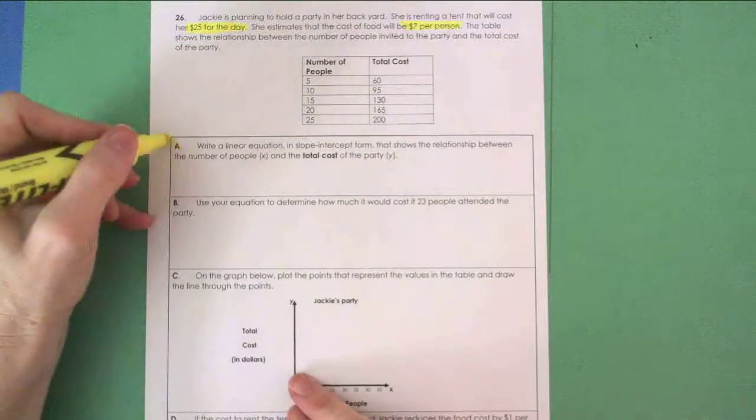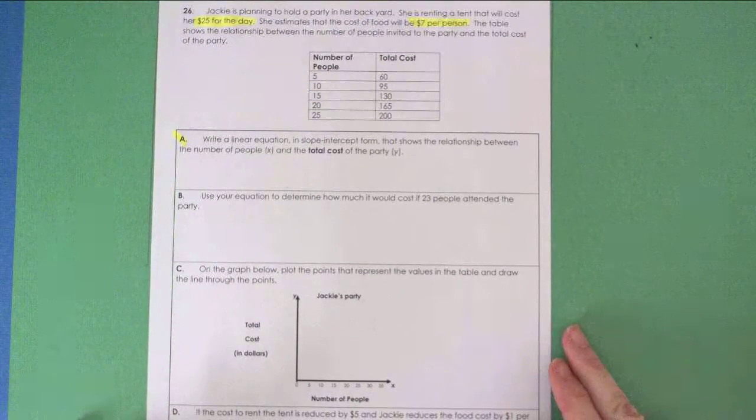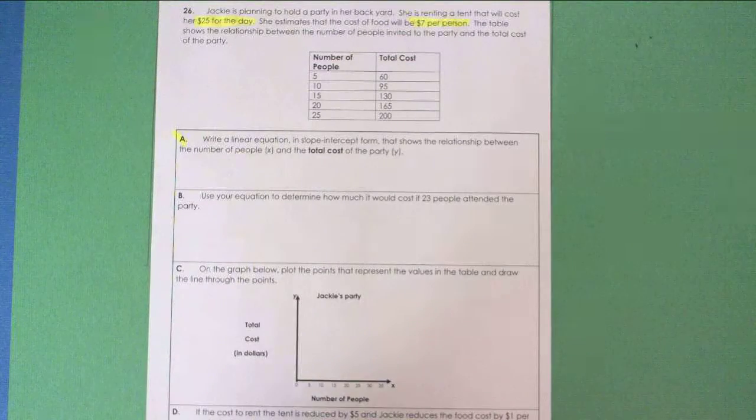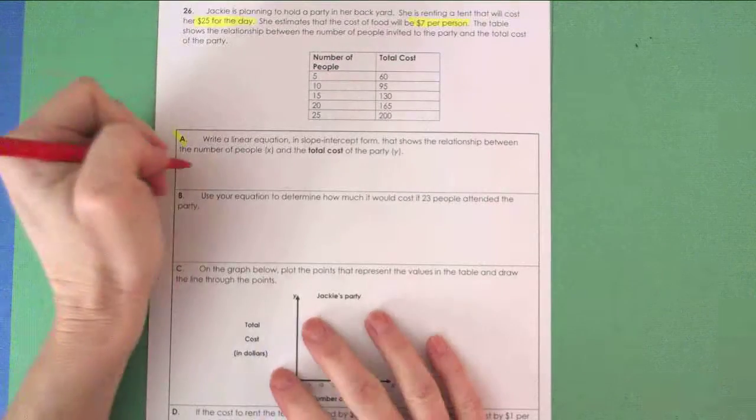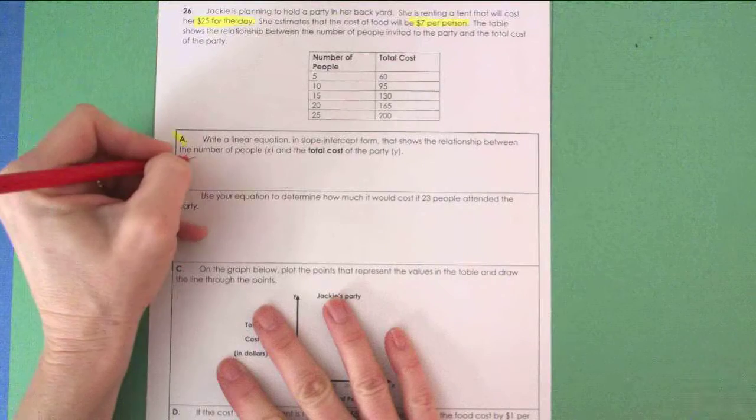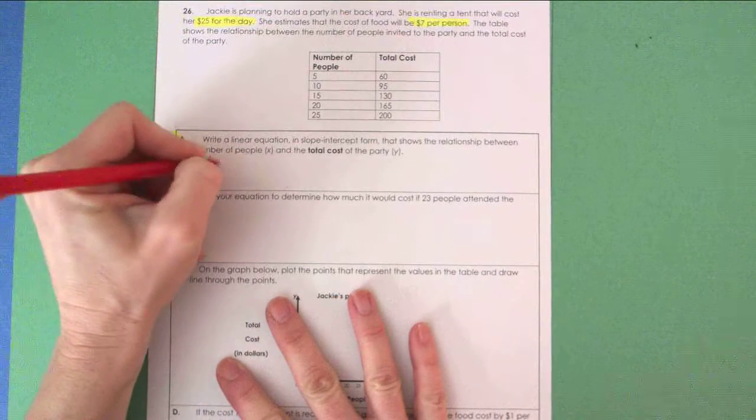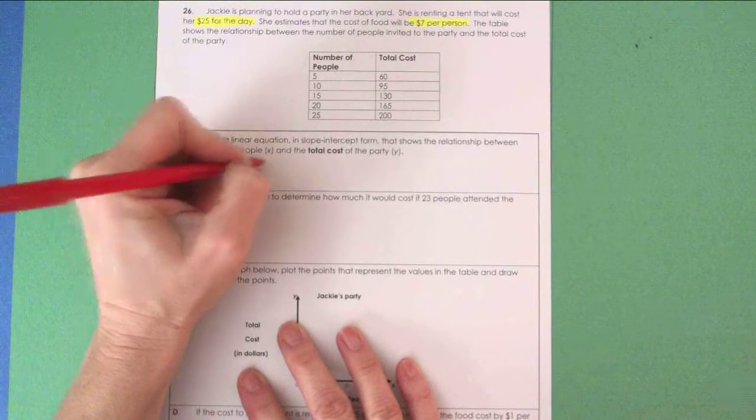Let's go to letter A. Letter A says, write a linear equation in slope-intercept form that shows the relationship between the number of people X and the total cost of the party Y. We have done this so many times on these videos. I'm just going to take two ordered pairs off of my table and write my equation.